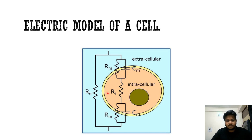When a low frequency current is passed through this cell, CM will offer very high impedance and current will pass through the path of low impedance, that is the path of RE. Similarly, when a high frequency current is passed, this circuit will be short-circuited due to the low impedance of CM and current will easily pass through RM. Usually the value of RM is much higher than the values of RI and RE.